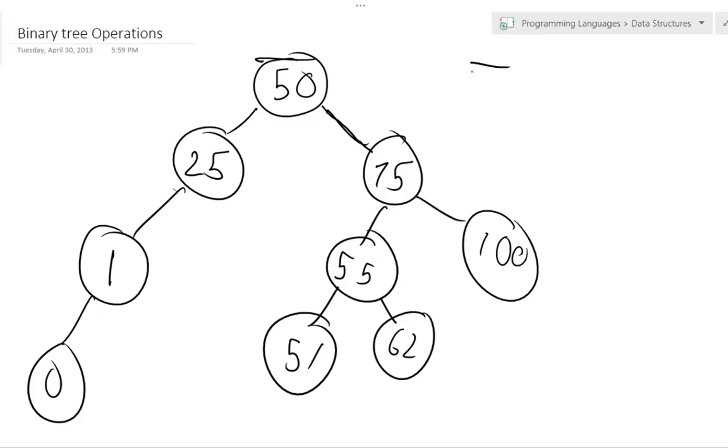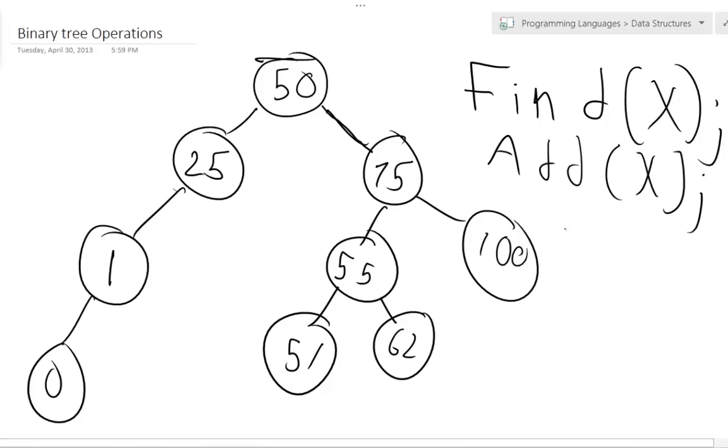It has the find method, where simply it finds a node. You want to find x. It has an add x. And it has a delete, which is a little bit more complicated. Deletion is always the most complicated method in the tree. You can almost bet on it.